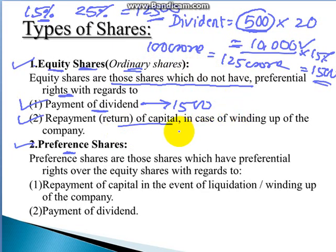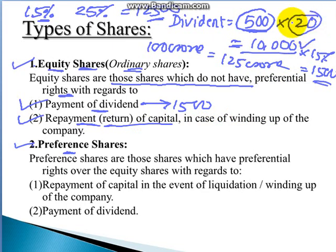The second benefit is the repayment or return of capital. Whenever the company winds up or closes, shareholders get their invested capital returned. Whatever money you invested in shares, you will receive back. We will look at preference shares in detail in the next slide.